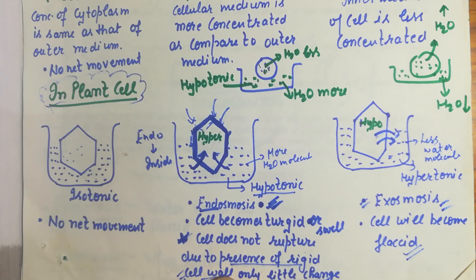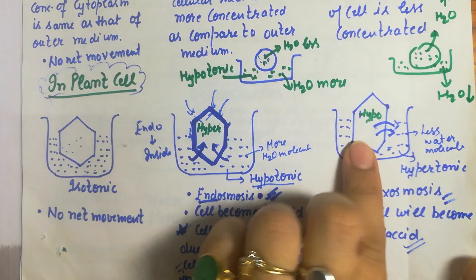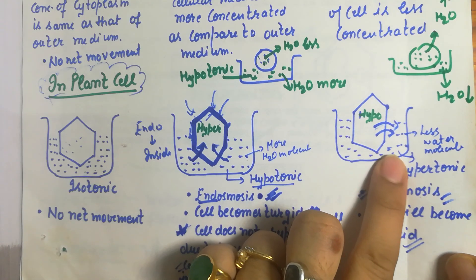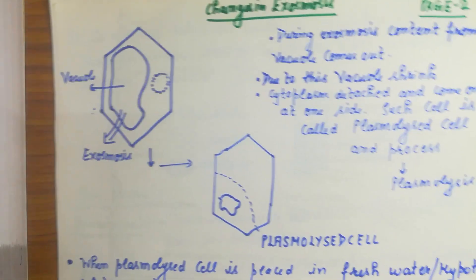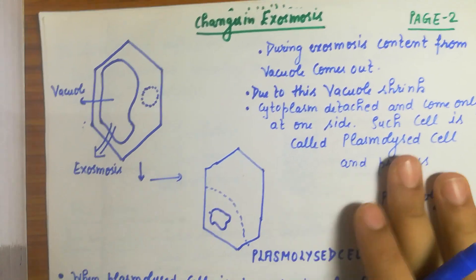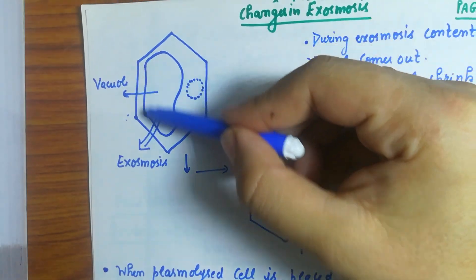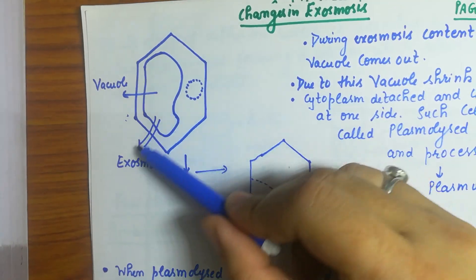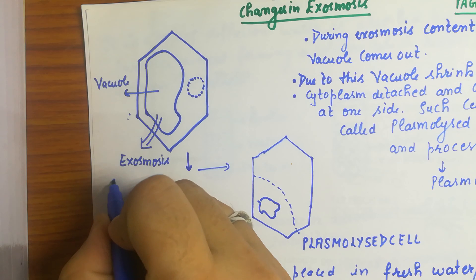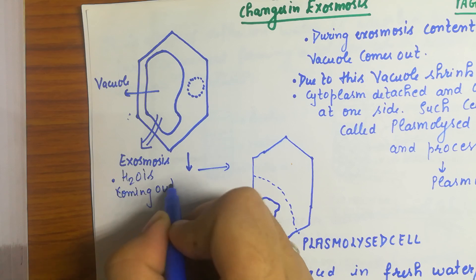We were discussing solutions in plant cells — isotonic, hypotonic, and hypertonic. In a hypertonic solution, the cell is losing water to the outer medium because inside water molecules are more. In exosmosis, water comes out from the cell. A normal plant cell has a vacuole, nuclear membrane, and nucleus. When exosmosis takes place, water comes out from the cell.